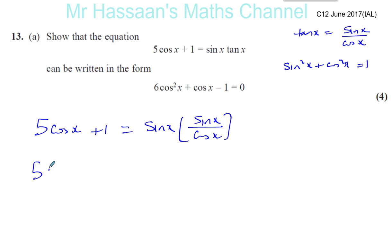So you have 5 times cosine x plus 1 equals, now this will give us like sine squared x, sine squared x over cosine x. So that gives us sine squared x over cosine x.